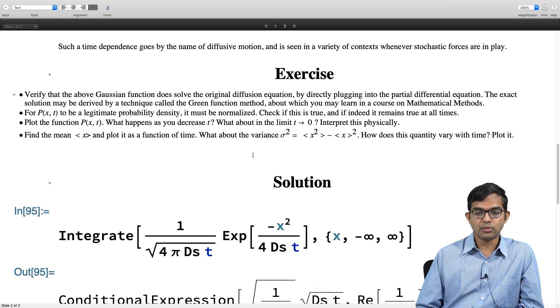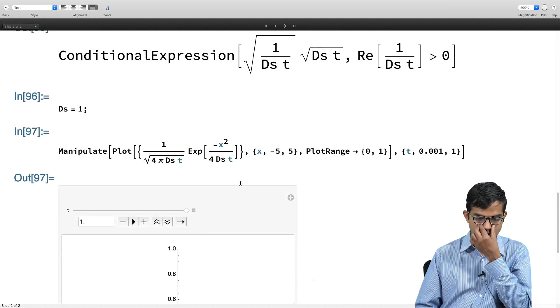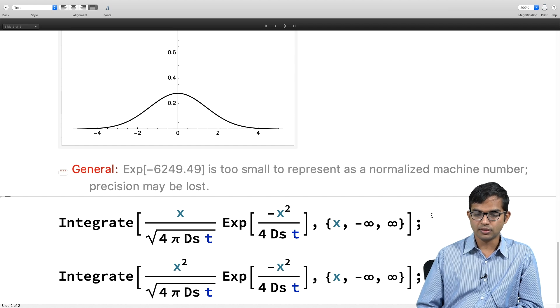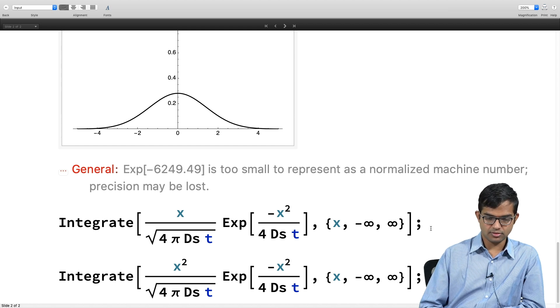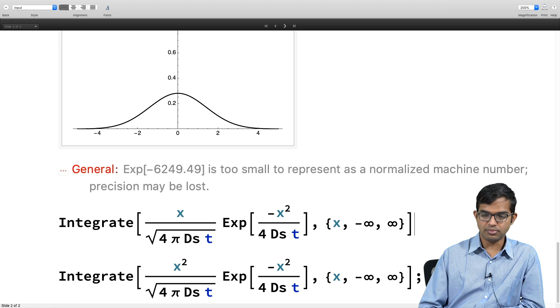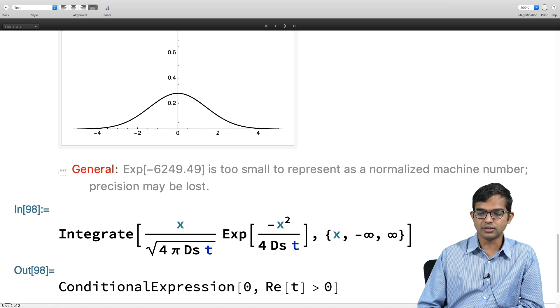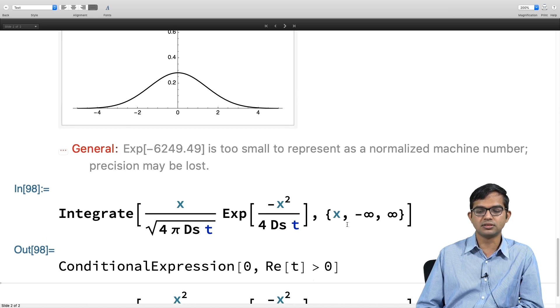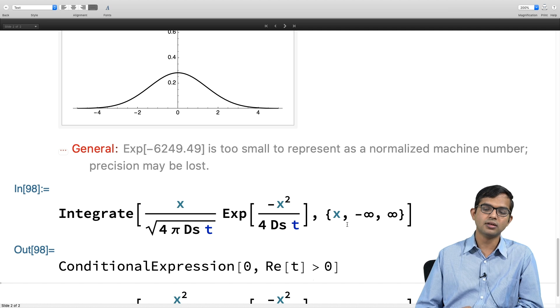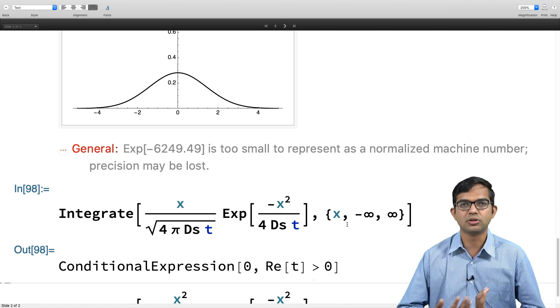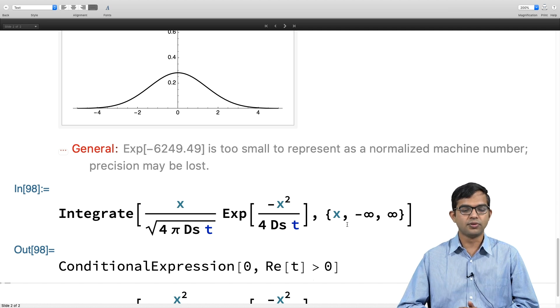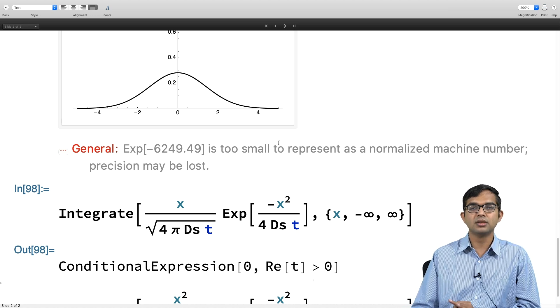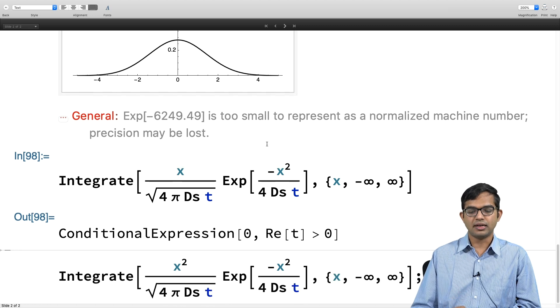That is also something that is not a surprise, but it is something that we can verify with the help of the visualization here. Now let us see what about the variance itself. Using integrate, we can actually do the mean. Mean of this function is simply given by x times p(x) integral from minus infinity to plus infinity. Once again, it gives me a conditional expression and it is 0 if real part of t is greater than 0. Indeed, real part of t is greater than 0 because t is just time. Therefore, the average position of your particle, no matter what the time is, is always 0.